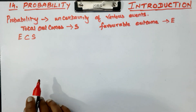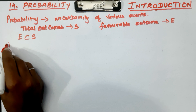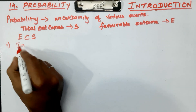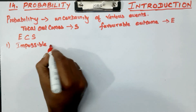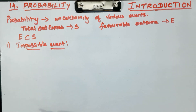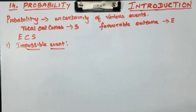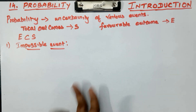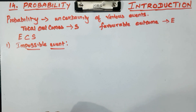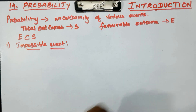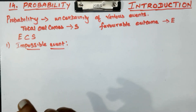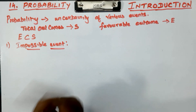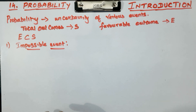There are many types of events. The first type is the impossible event. What is an impossible event? For example, let's take a die used in snake and ladders. The die has 6 faces: 1, 2, 3, 4, 5, 6. If I say I need to get a 7, how many times can I get 7 on a die? There is no 7 on a die.